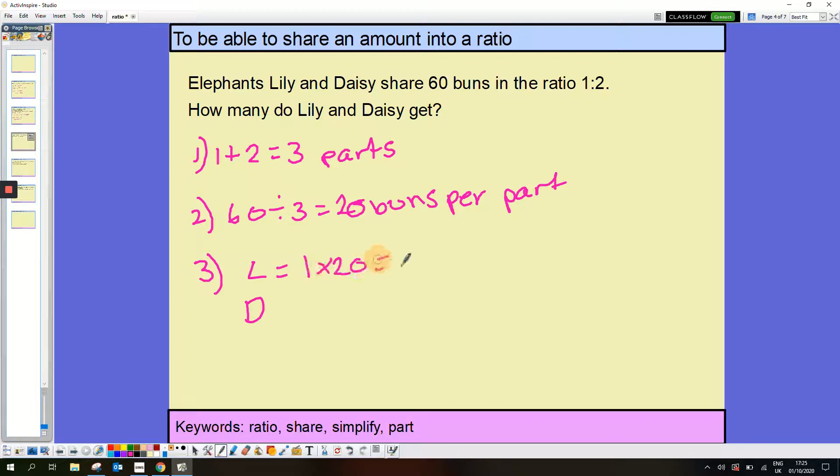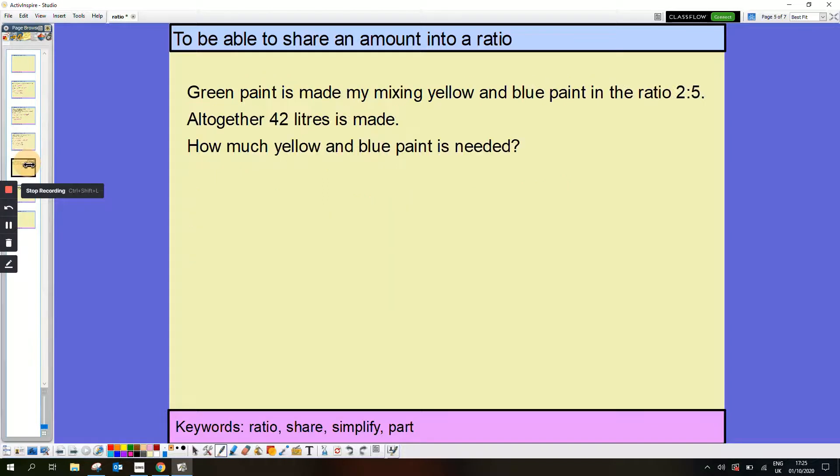Another example. Green paint is made by mixing yellow and blue paint in a ratio of 2 to 5. Altogether, 42 litres are made. How much yellow and blue is needed? So first job, add the ratio. So I've got 7 parts. Now, second thing is to do the 42 litres divided by 7. So that's 6 litres per part.